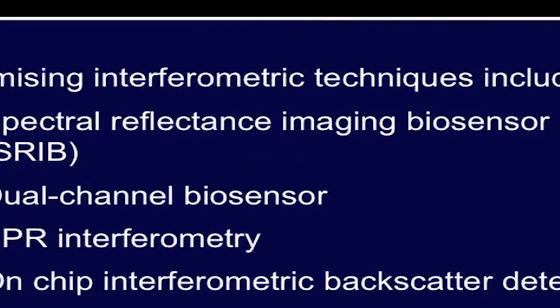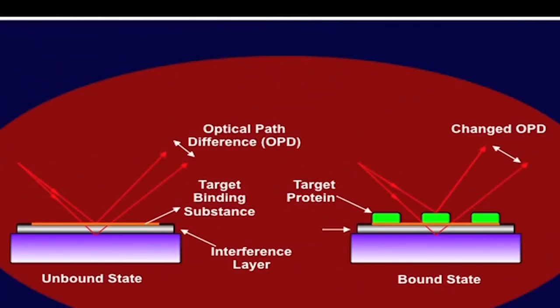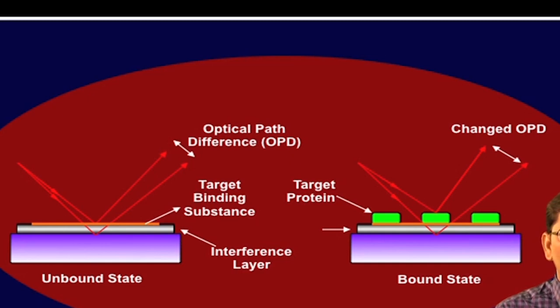There are many promising interferometry techniques that have emerged, which include spectral reflectance imaging biosensor or SRIB, dual channel biosensor, SPR interferometry, on-chip interferometry backscatter detection, and biological compact disc. In interferometry, the phase difference of wave fronts are transformed into observable intensity fluctuations known as interference fringes. The interferometry techniques relate the optical phase to biomolecular layer density on the surface.